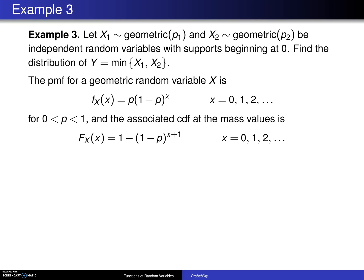The first two examples we encountered covered univariate transformations. That is, we had a discrete random variable X in the first case and wanted the distribution of Y equals X squared. In the second example, we had a continuous random variable X and wanted the distribution of Y equals the square root of X. This example covers the bivariate case. Let X1 be geometric(p1) and X2 be geometric(p2), independent random variables with supports beginning at 0. Find the distribution of Y equals the minimum of X1 and X2.